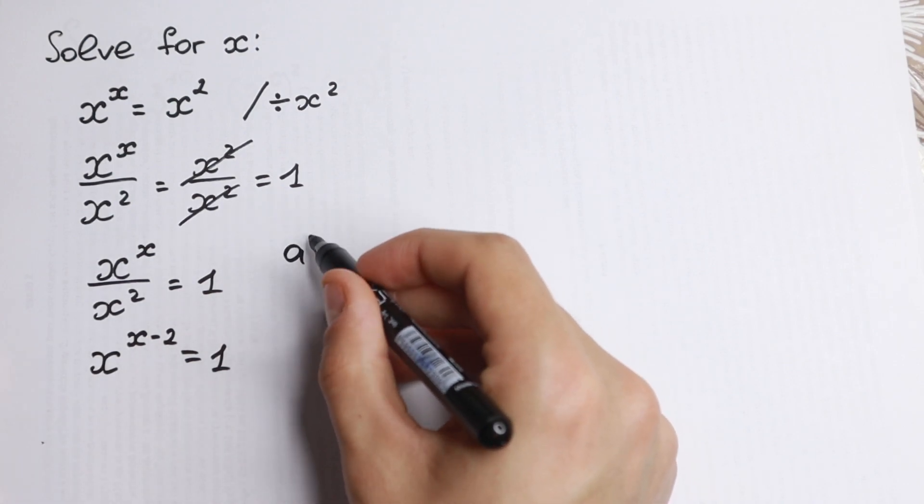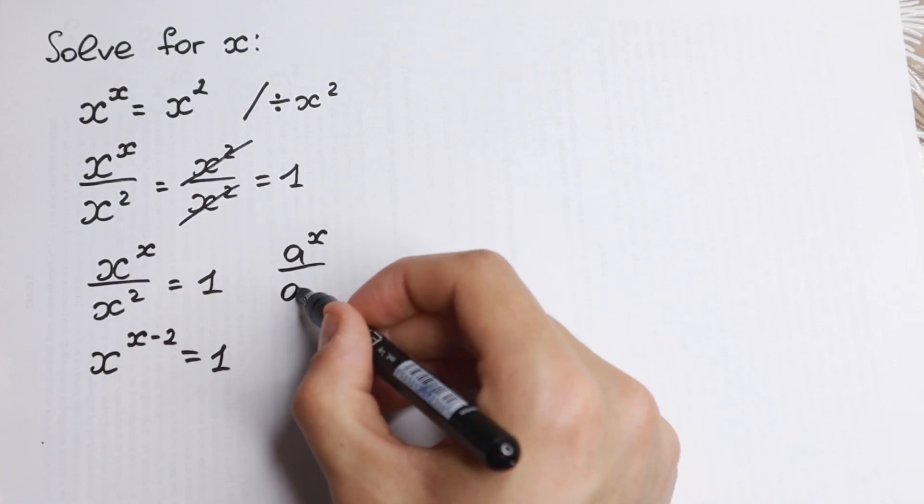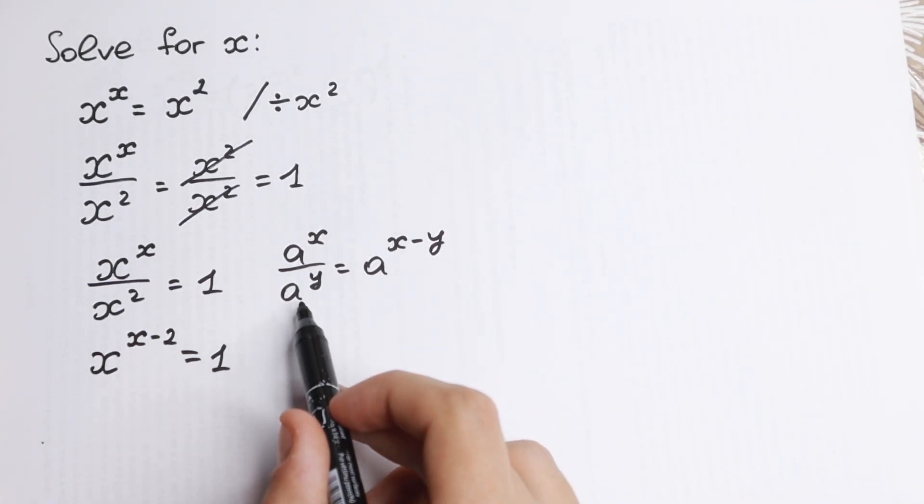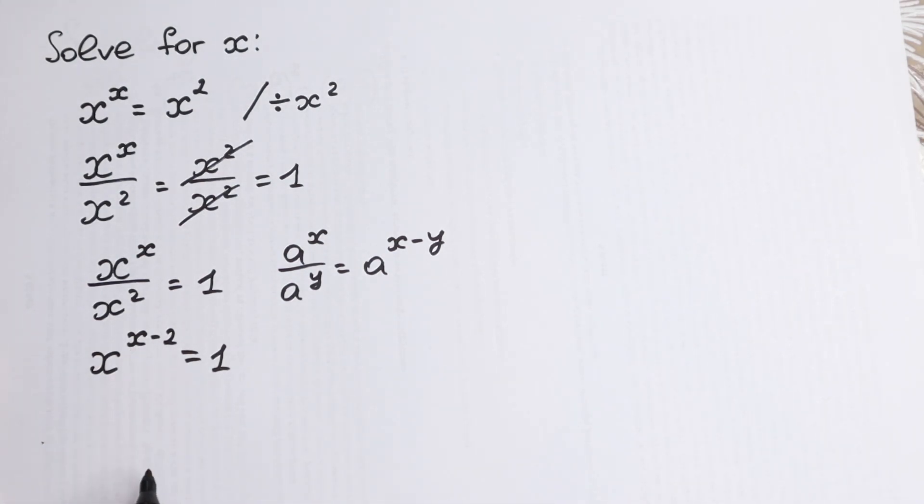This is a rule because if we have for example a to the power x dividing by a to the power y we can write it as a to the power x minus y. If we have division we can write it as a subtraction as the power.